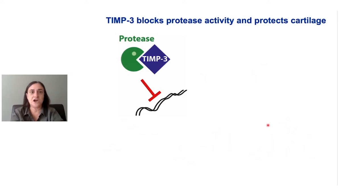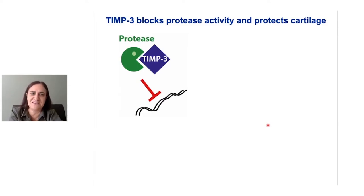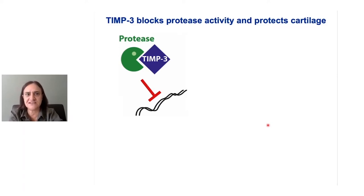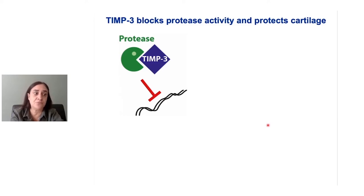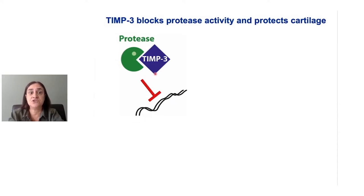My research has largely focused on a protein called tissue inhibitor of metalloproteinases 3, which we abbreviate to TIM3. TIM3 is a protein that blocks the activity of these proteases, and by doing that it's able to protect cartilage. The cells in our cartilage make TIM3 and release it, and in the environment around the cell, this TIM3 molecule then interacts with the proteases and blocks them from interacting with the proteins they would normally chop up. So TIM3 is able to protect the cartilage from the activity of these proteases.